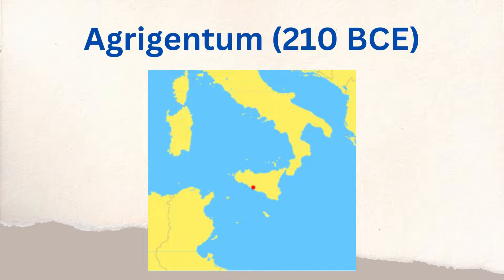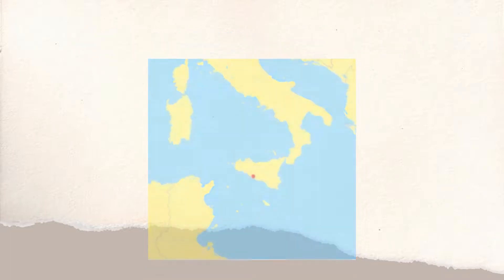This battle at Agrigentum in 210 BCE — you can see on the map it's in the southern part of Sicily, which is a major battleground of this war. Things are starting to turn around a little bit for the Romans, even though in Spain things are questionable and in mainland Italy you still have Hannibal wreaking havoc. In other places, the war is going well.